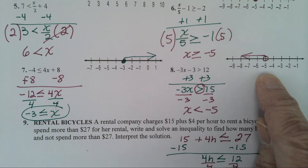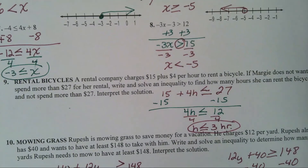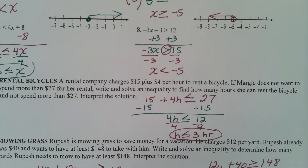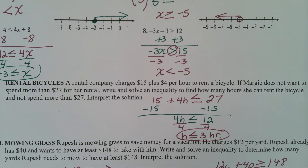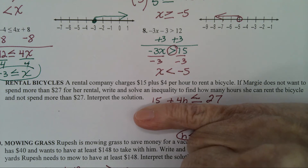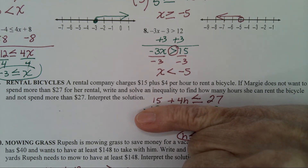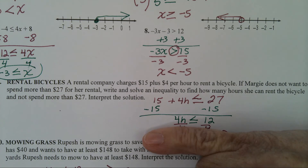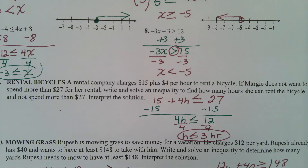In number 9, you have to write an inequality and then solve it. A rental company charges $15 plus $4 an hour to rent a bicycle. If Margie does not want to spend more than $27 for her rental, write and solve an inequality to find how many hours she can rent the bicycle. Your equation is going to be 15 plus 4 times h is less than or equal to $27. Our job is to isolate the h, so first we get rid of the 15 — you subtract. You now have 4 times h is less than or equal to 12. Divide both sides by 4 and she can rent the bicycle for 3 hours or less. H is less than or equal to 3 hours.